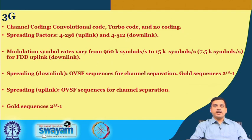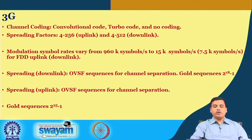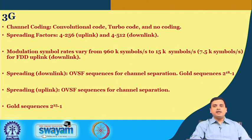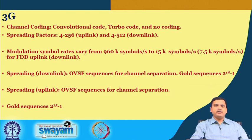Channel coding supported convolution code, turbo code, as well as no coding depending on link condition. As you increase the spreading factor your effective data rate decreases. When link conditions are good or interference is less, one can use a smaller spreading factor thereby increasing the data rate, whereas in adverse situations with heavy interference, larger spreading factors could be used. The uplink and downlink spreading factors were different because of several technical reasons. Different sequences were available for spreading symbols and different symbol rates were also possible.